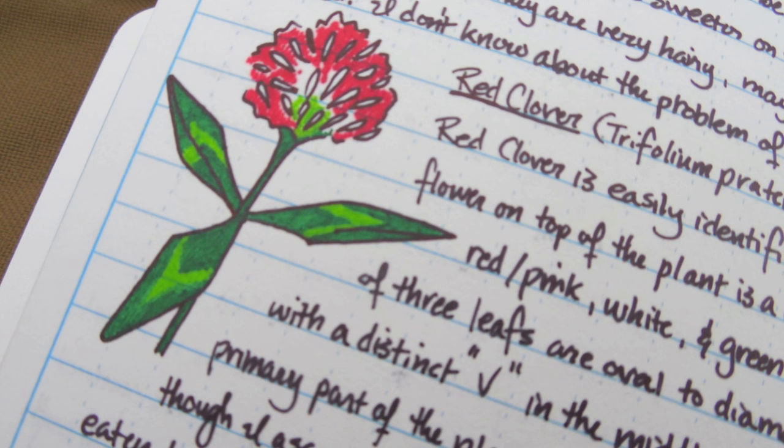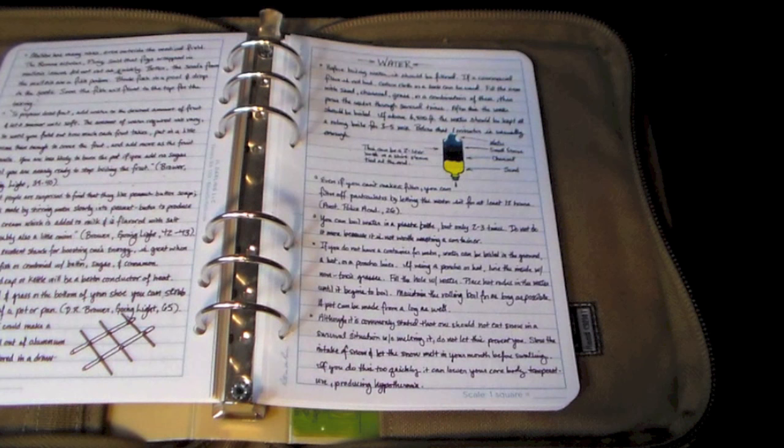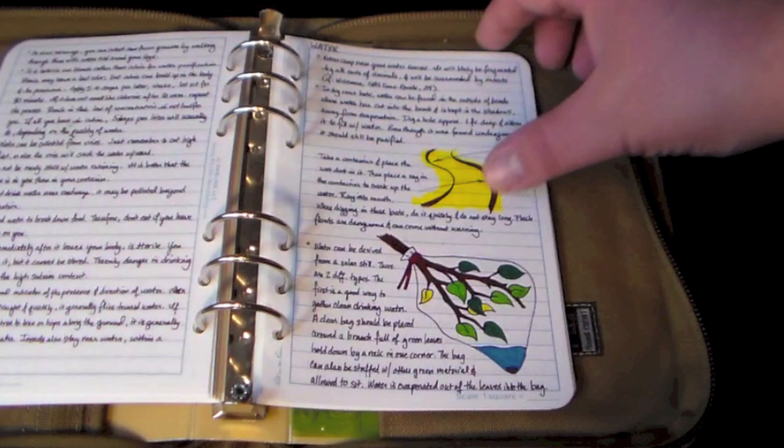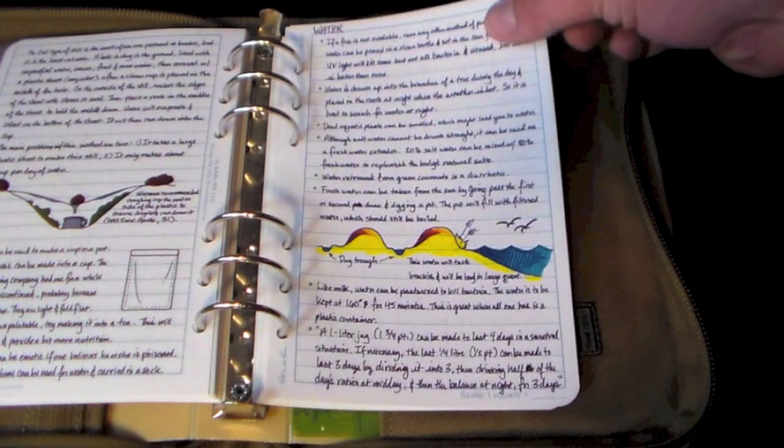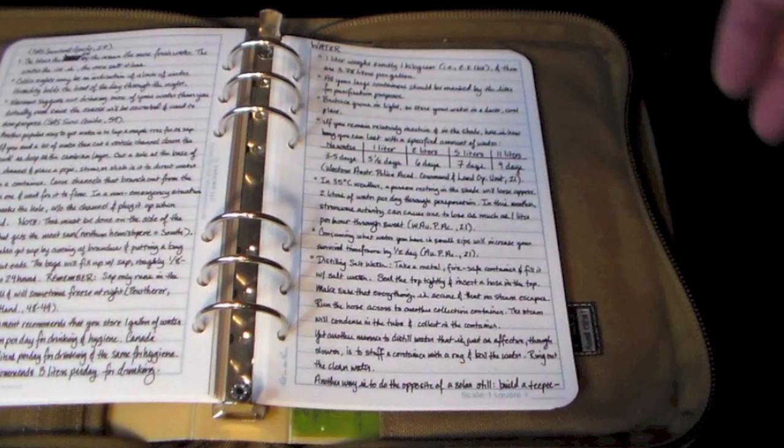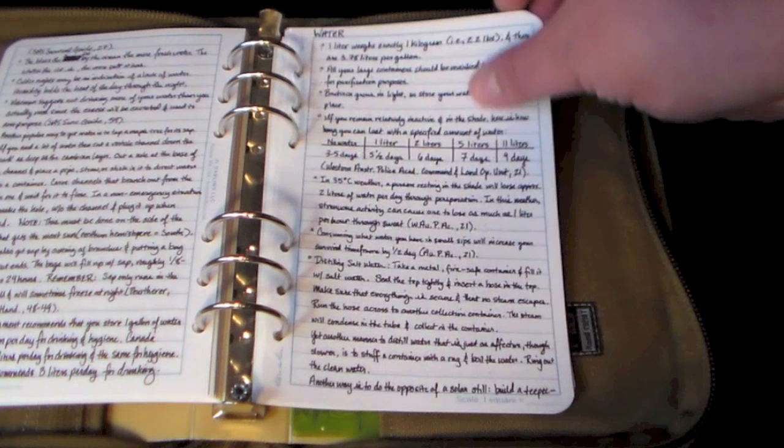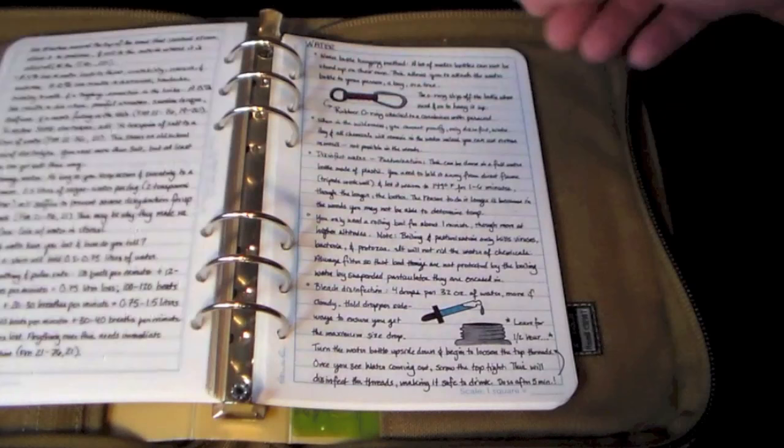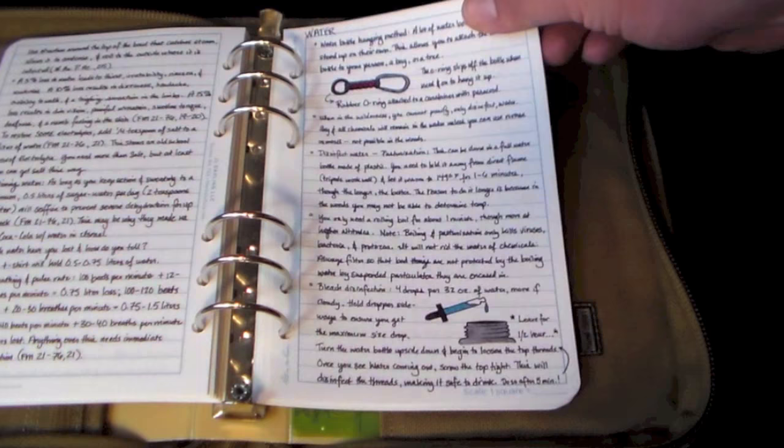After my food section I have my water section and this is where I talk about how to purify water, how to gather water, filter water, things like that. I also put notes about how much water I need on certain trips and I keep a record of exactly how to use certain types of purification methods in case I forget. So for instance how many drops of iodine to add to a liter, how many drops of bleach to add to a liter, those things that I could easily forget.